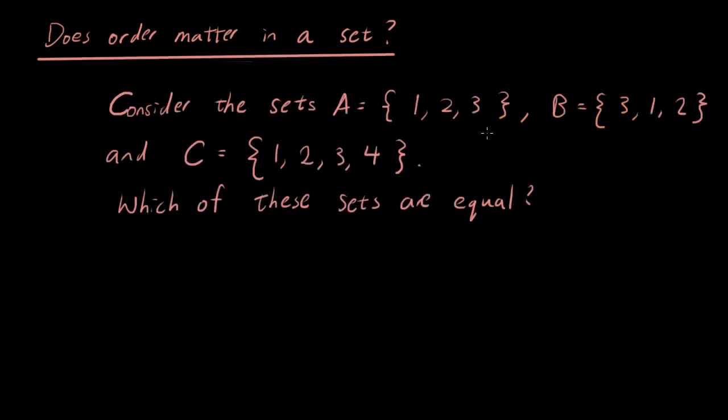The question is: consider the sets A equals the set of 1, 2, and 3; B equals the set of the numbers 3, 1, and 2; and C equals the set of numbers 1, 2, 3, and 4. Which of these sets are equal?